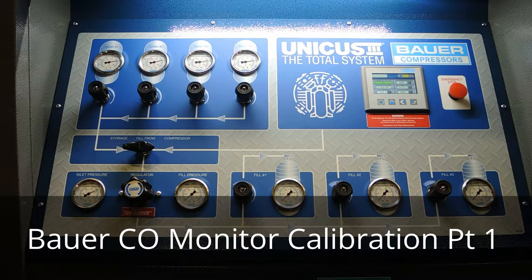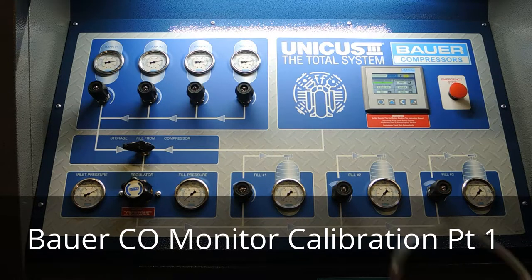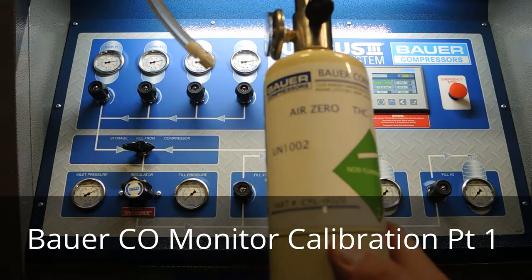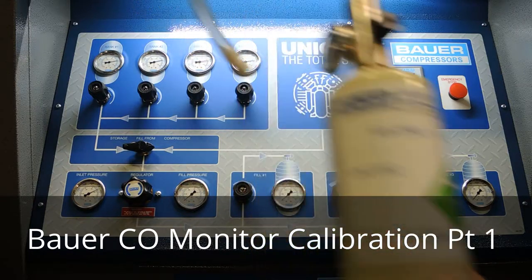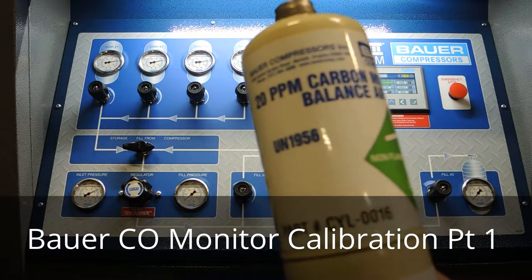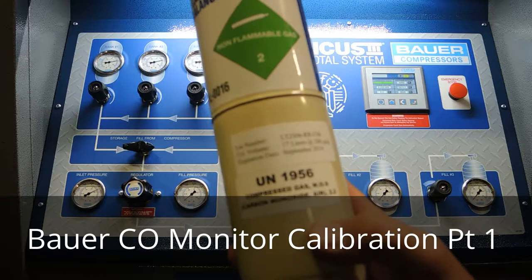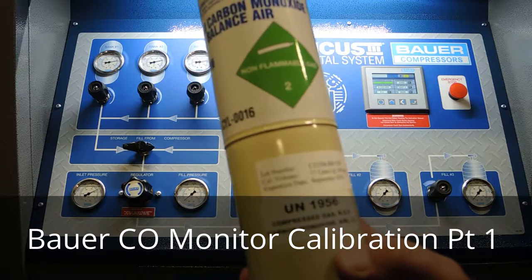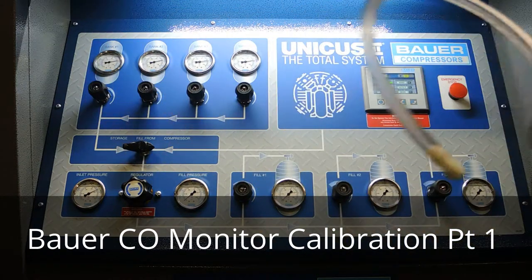There's going to be a couple of things that you need to make sure that you've got. You want to make sure you have your test gases. There's going to be two test gases required. You're going to need your zero gas and also your 20 part per million test gas. Make sure that these are not expired and that there is a proper range of gases.